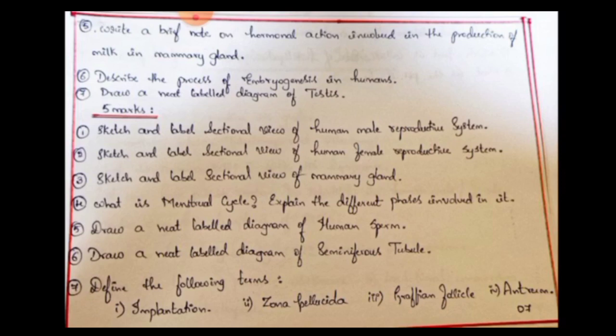Next 5-mark question: Explain the different phases of the menstrual cycle. The menstrual cycle is a 28-day cycle with 4 phases — practice this one. Draw a neat labelled diagram of seminiferous tubules for three marks. Expected terms for extra focus: implantation, zona pellucida, Graafian follicle, antrum — antrum and Graafian follicle require extra focus.